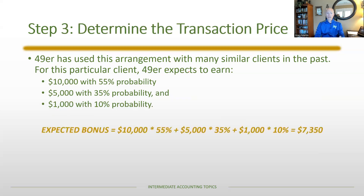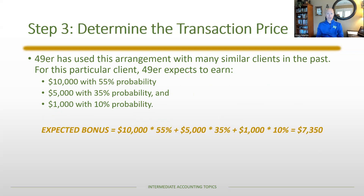There are really two options. The expected value is a weighted average: 55% × $10,000 + 35% × $5,000 + 10% × $1,000 = an expected bonus of $7,350. The benefit of this method is that if you do this enough times, on average you'll be right. The downside is that you will never actually receive exactly $7,350, so no matter what, you'll have to make some adjustment when you get paid the actual bonus.